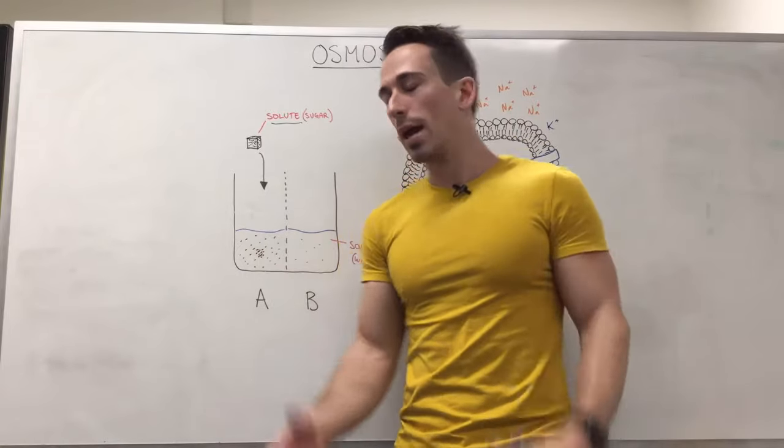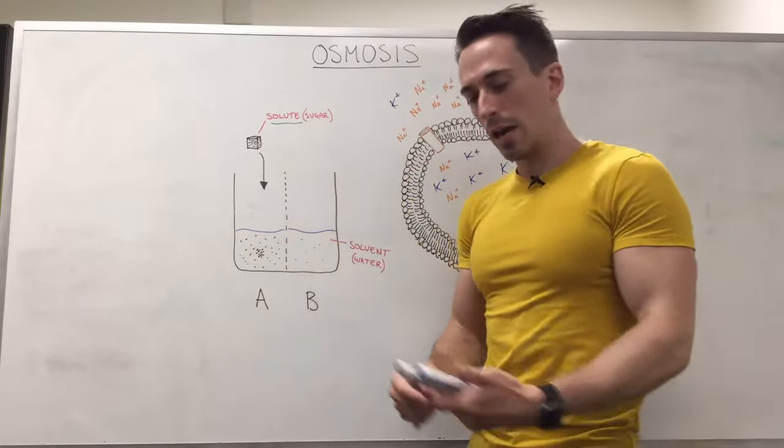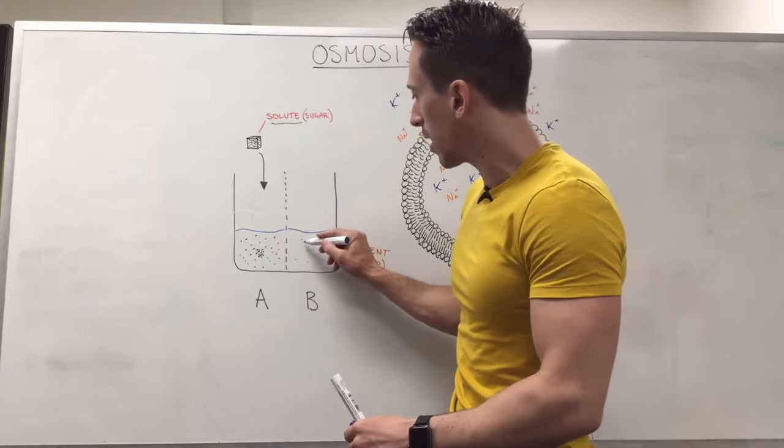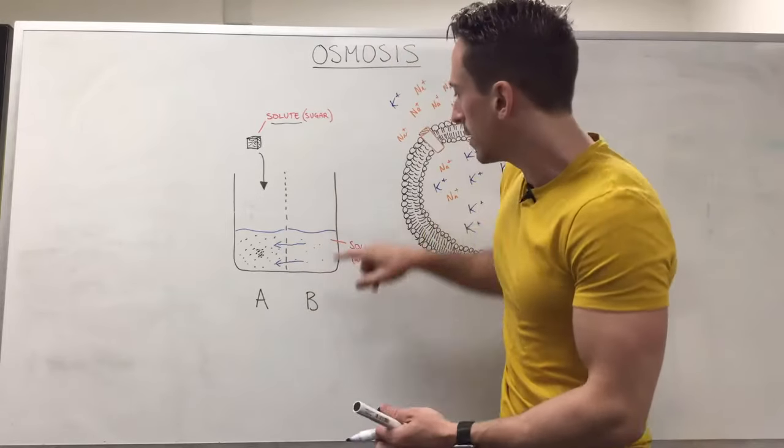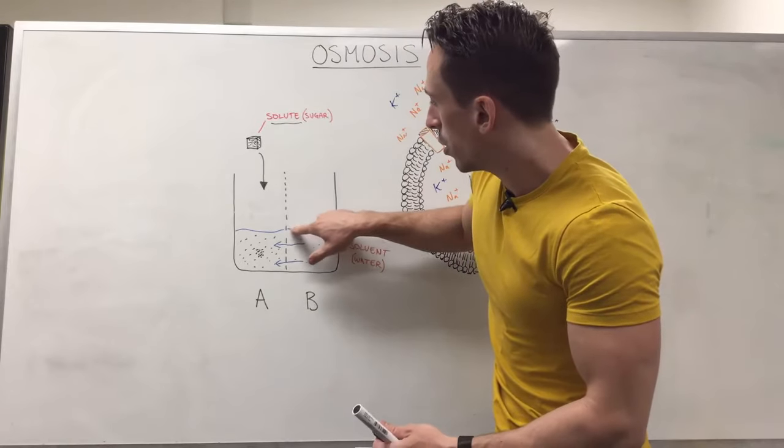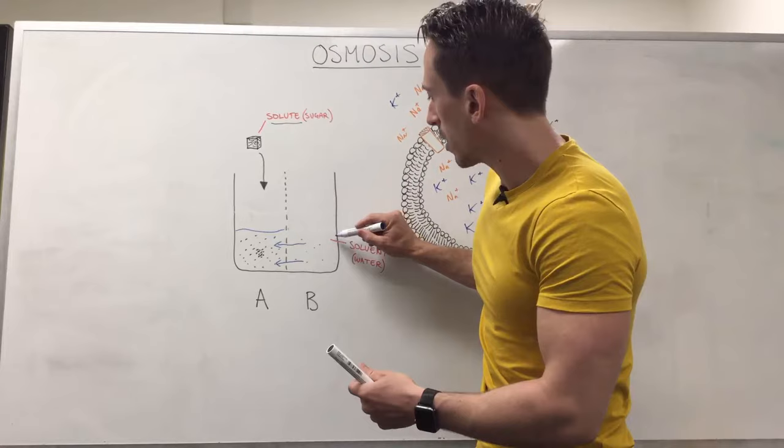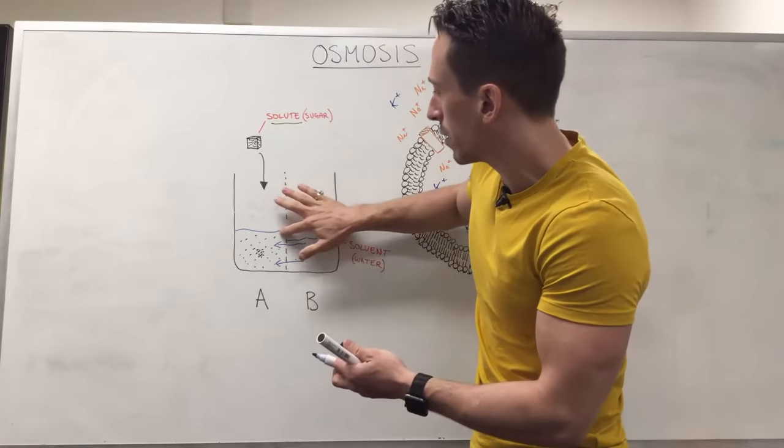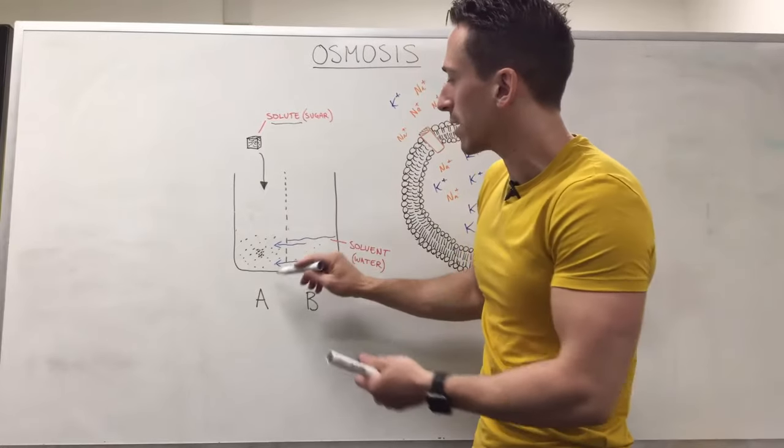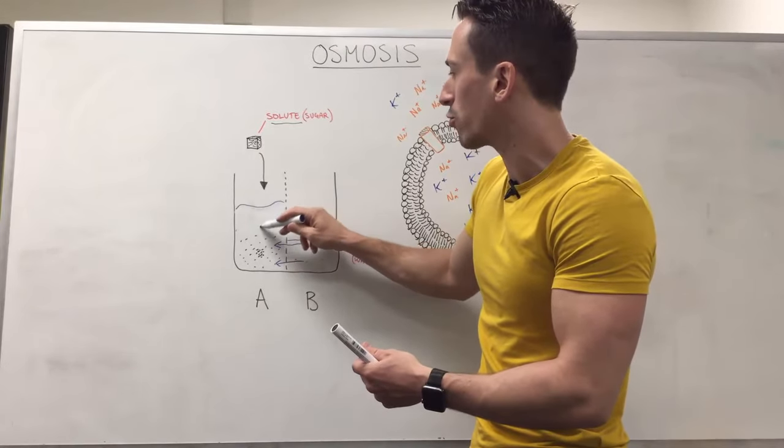Well you can move the solvent. If I were to move the solvent from side B to side A, what that means is the volume of solvent on side B starts to reduce and the volume on side A starts to increase.